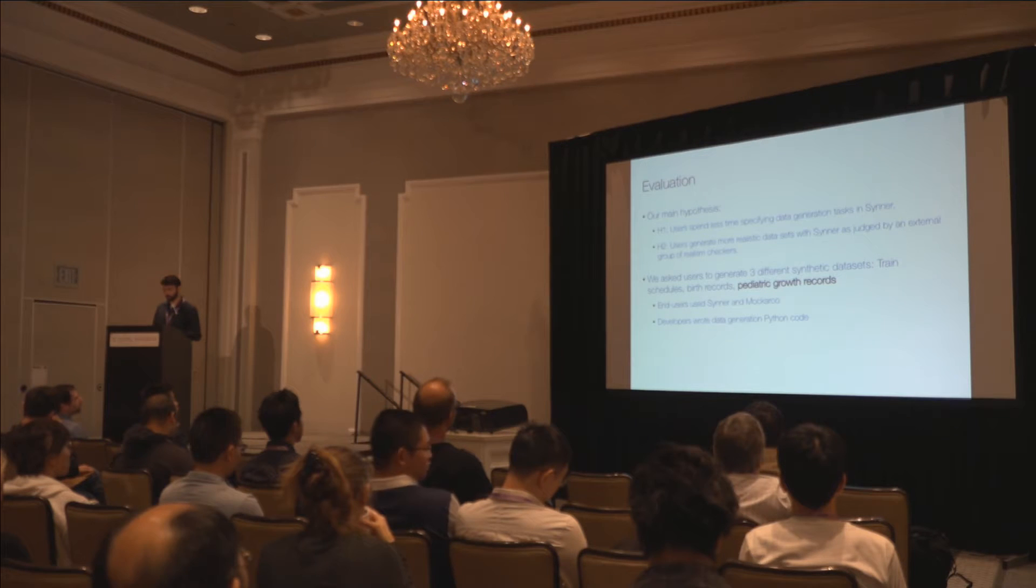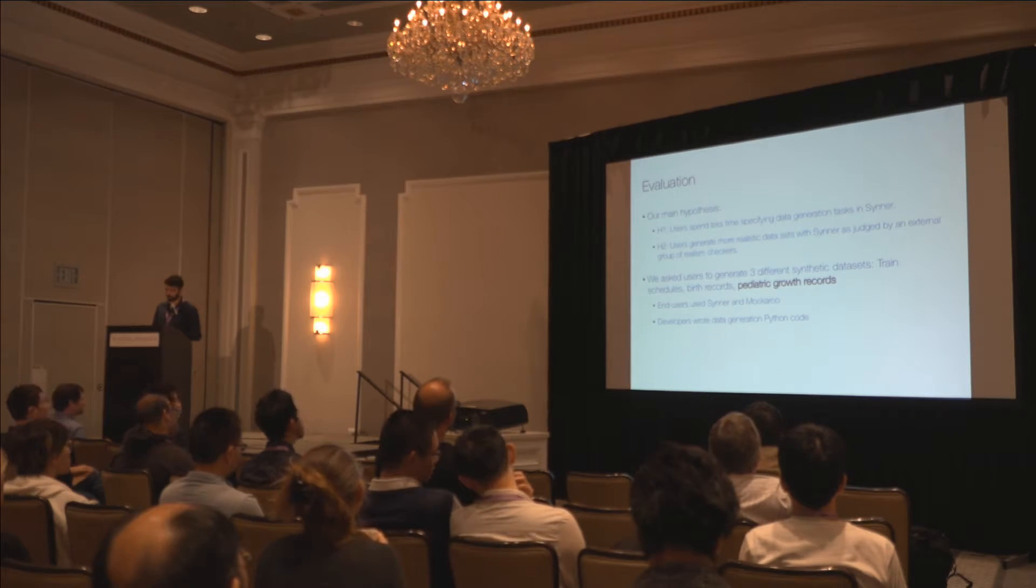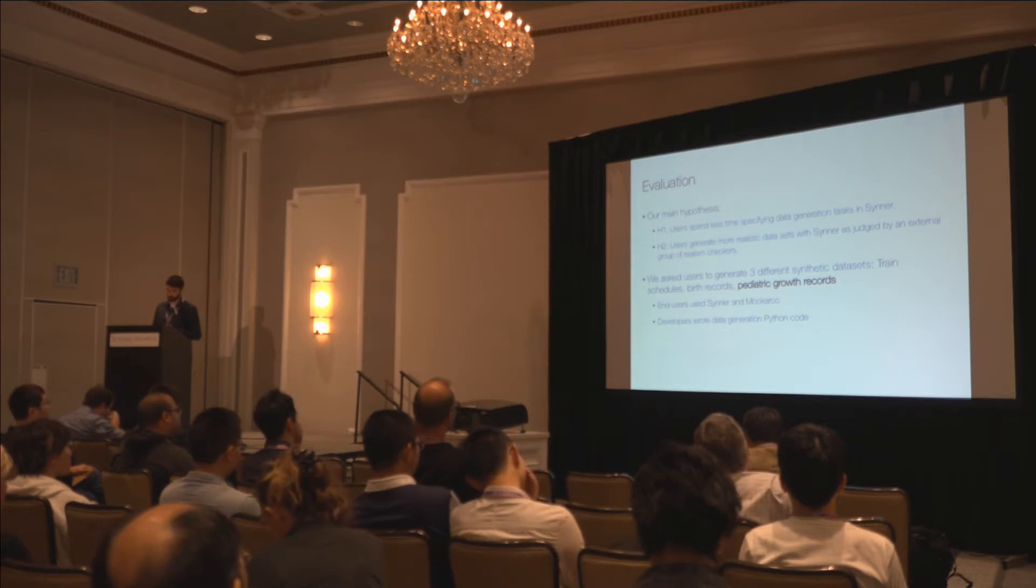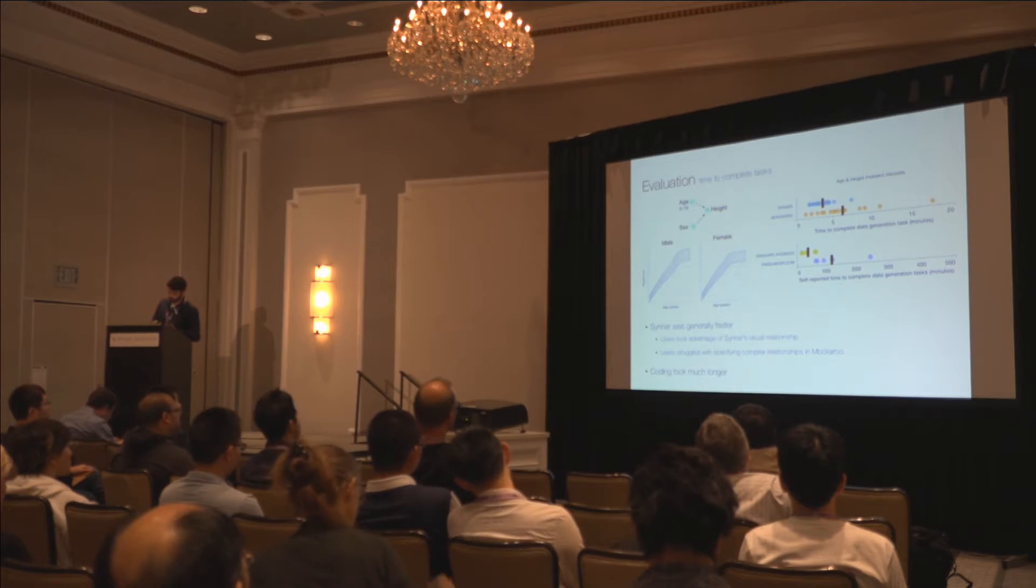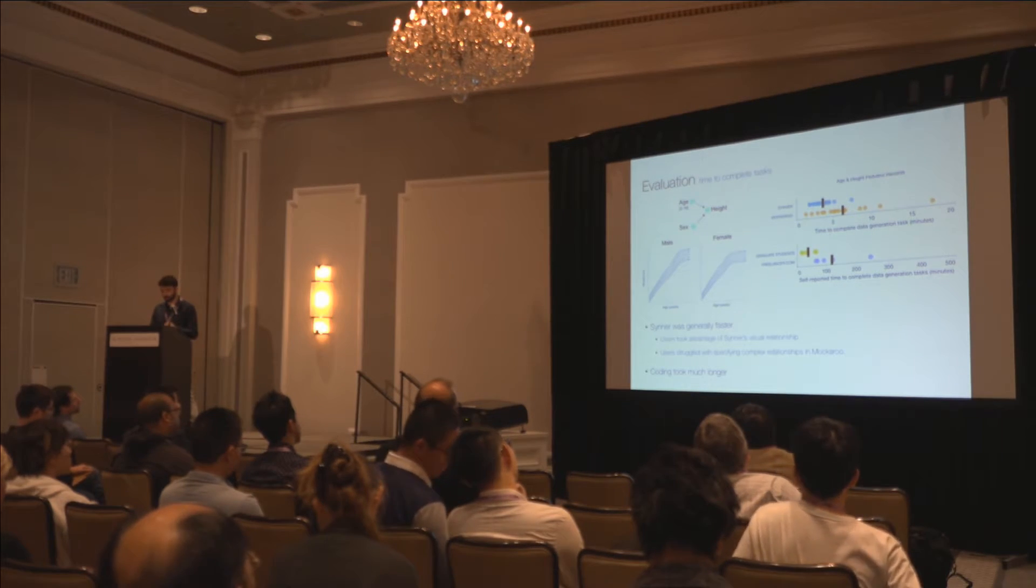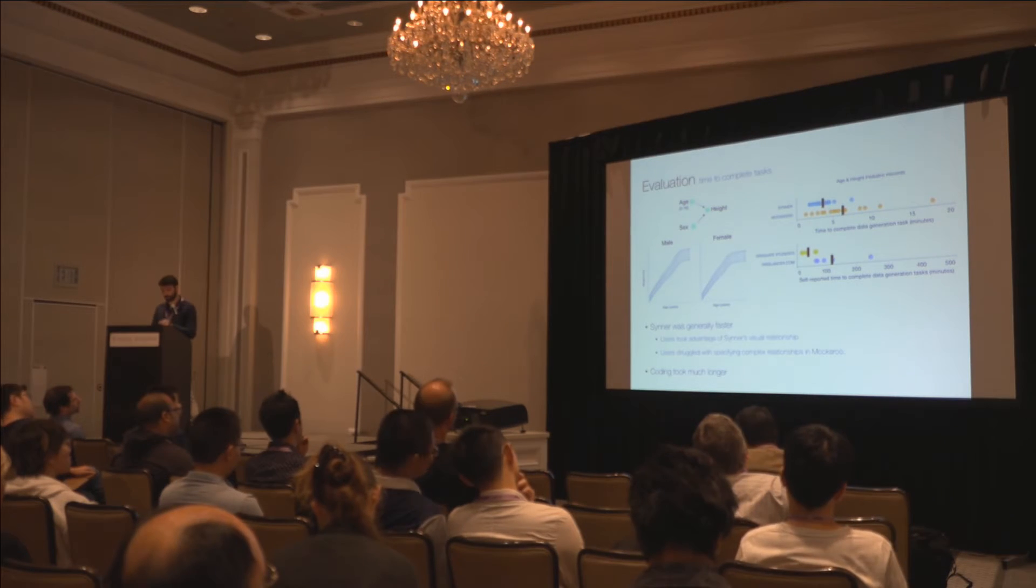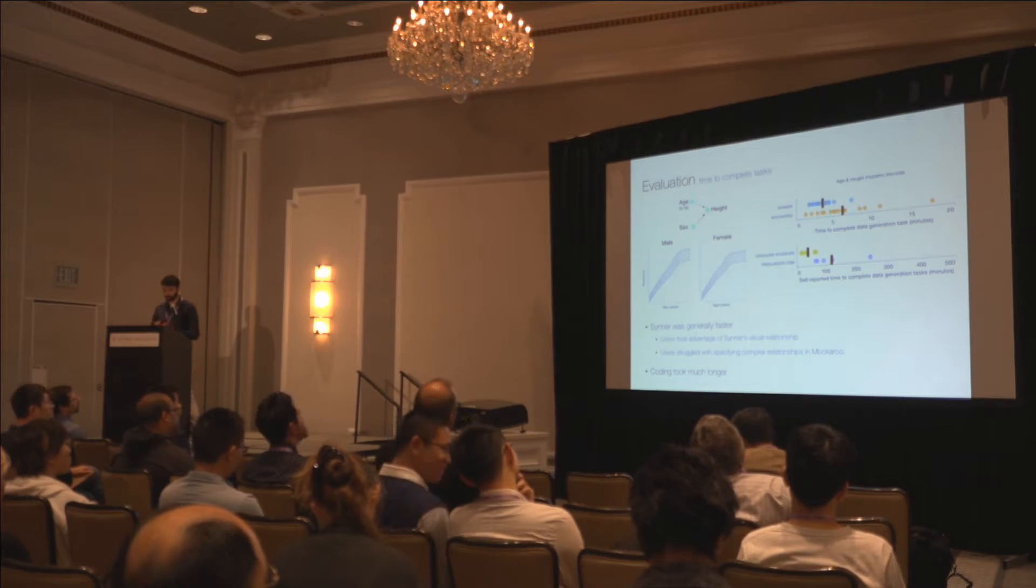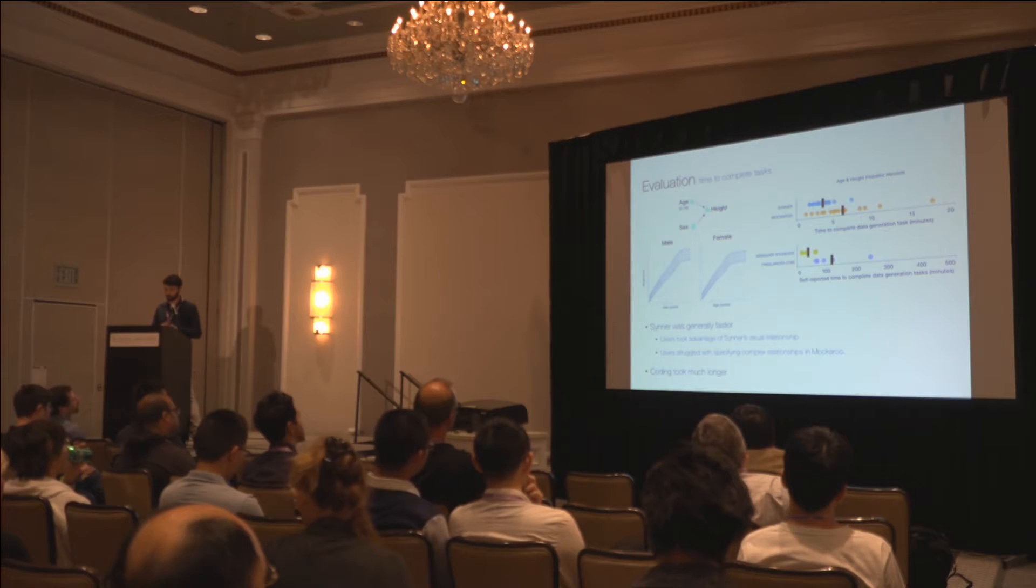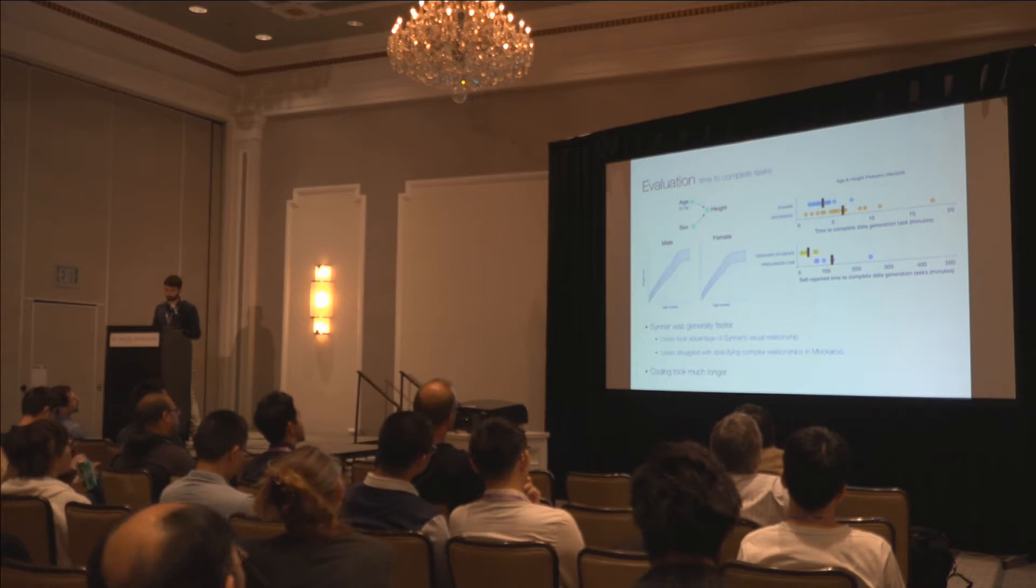And the full detail of the evaluation, of course, are in the paper. Here, I'm just only showing you one task, which is the children's growth record. So for children's growth record, we ask users to generate age, sex, and height. And height depends on age and sex in the plot, as you can see in this slide. And on the right, you can see the graph that each dot represents the time for task completion for each user. And the black bar is the mean time to completion. And you can notice how it was generally faster to generate data using SINNER. And developers, both hired and graduated students, of course, took much longer.